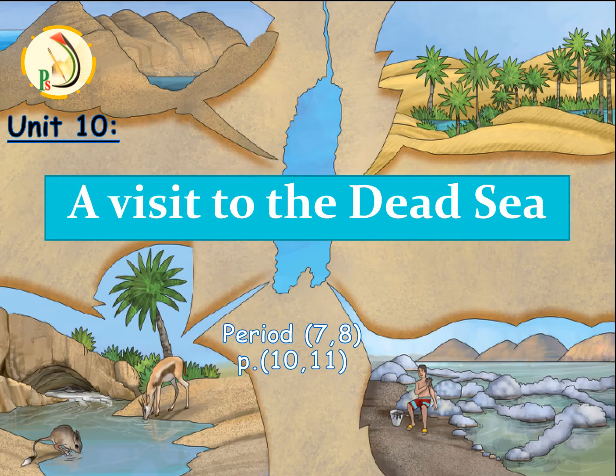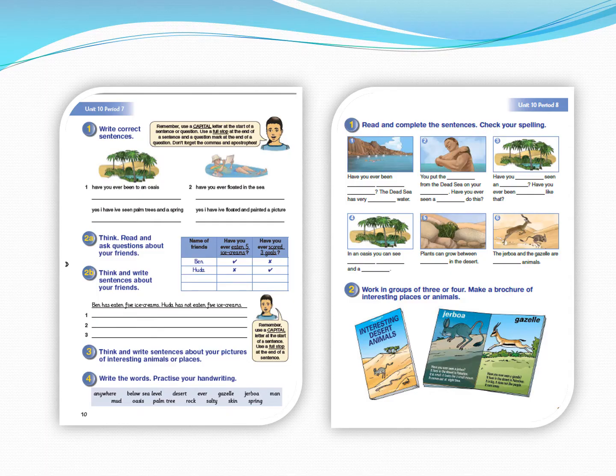Unit 10. The last two periods in this unit are 'Visit to the Date Sea.' Period 7 and Period 8. Please open your book to pages 10 and 11. These are our pages. Today, inshallah, we will do the first and second activity from Period 7, and the first activity from Period 8.